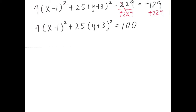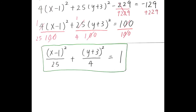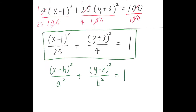Then we add 229 to both sides, which gives us 4 times (x minus 1) squared plus 25 times (y plus 3) squared equals 100. To change the ellipse equation into standard form, we need to make sure that the equation equals 1, so we divide both sides by 100. After simplifying, we get (x minus 1) squared divided by 25 plus (y plus 3) squared divided by 4 equals 1. This is the standard form of the ellipse equation.